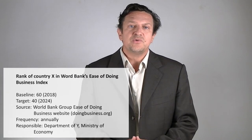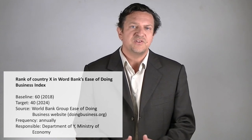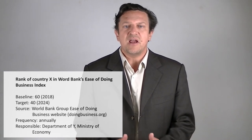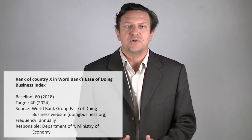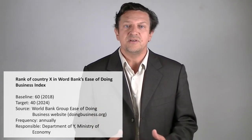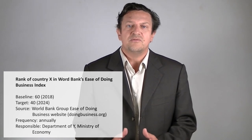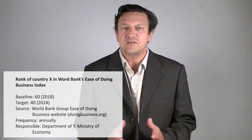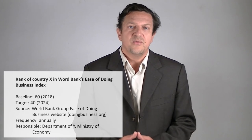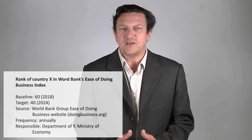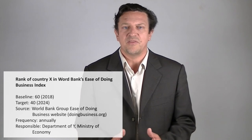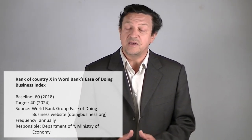This indicator makes use of secondary data as well — an established index regularly published by the World Bank. In this case, we use the ranking of a country in the index, which gives us an understanding of how the country is evolving relative to other countries. Alternatively, we could also use the score rather than the rank, which may show us a completely different trend over time. This indicator even gives us the website where we can find data for this index. It is good practice to be as concrete as possible when describing sources, as it helps other people verify our data and makes the indicator more credible.